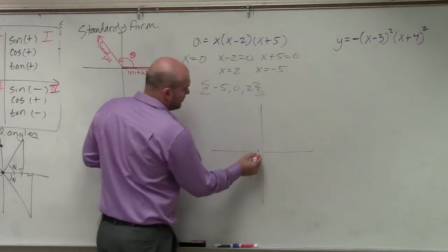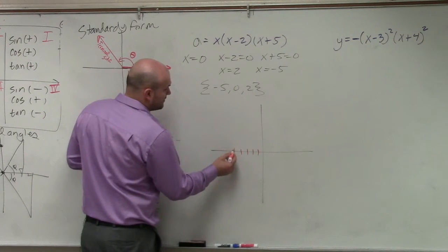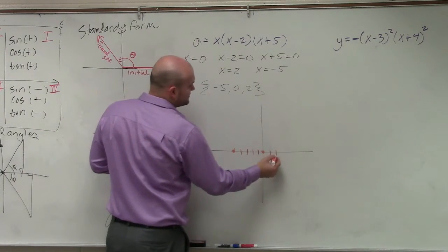So what we're going to want to do in this case is now plot these points. So I have negative 5, 1, 2, 3, 4, 5. I have 0, and I have positive 2.